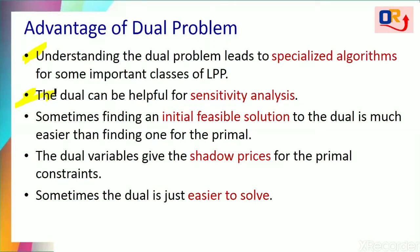The second advantage is that the dual can be helpful in sensitivity analysis. Sensitivity analysis means: after obtaining the optimal solution, suppose we want to slightly change the RHS of the original problem, or some other parameters, or add more constraints — how does the optimal solution change? In summary, by adding or modifying parameters, how does the optimal solution change? That is sensitivity analysis.